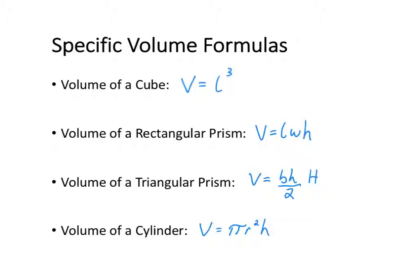In these formulas, we are incorporating the area of the base. For a rectangular prism, the area of the base is length times width. For a triangular prism, the area of the base is base times height divided by 2. For a cylinder, the area of the base is π times the radius squared. We then multiply each of these areas of the base by the height. So instead of using the general formula, we can use these specific formulas when calculating the volume of each shape.